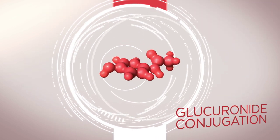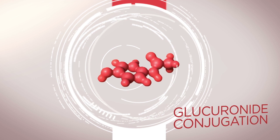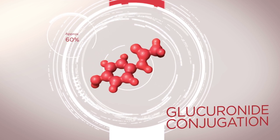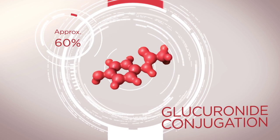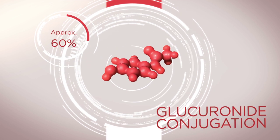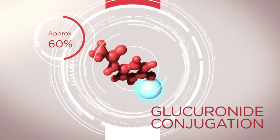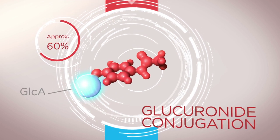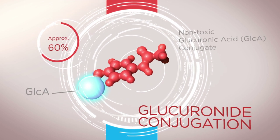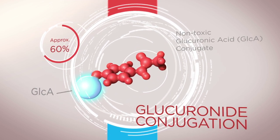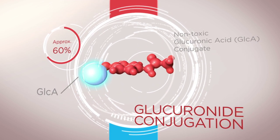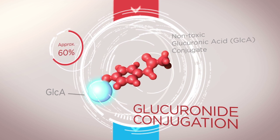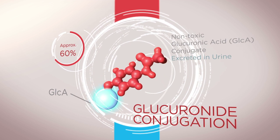The glucuronide conjugation pathway accounts for approximately 60 percent of acetaminophen hepatic metabolism. The resultant glucuronide conjugate is non-toxic and is excreted in the urine.